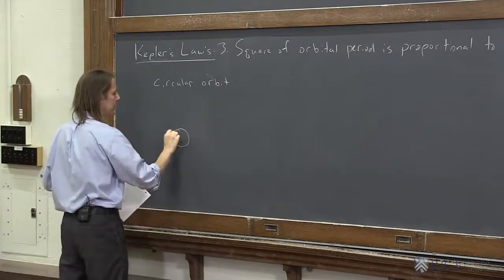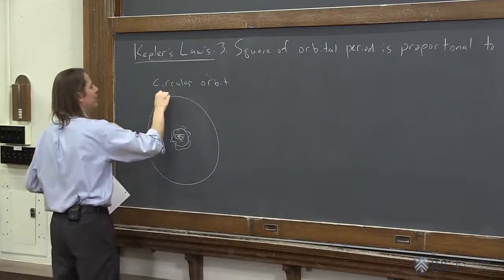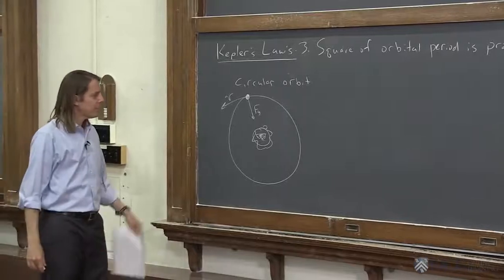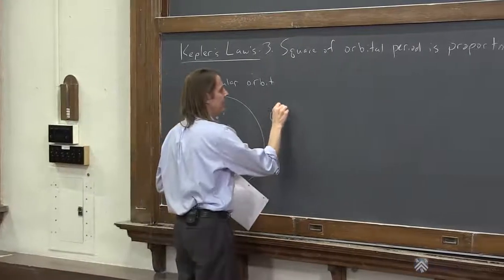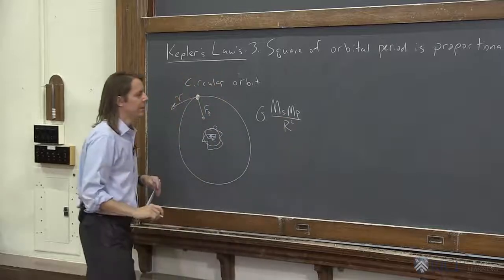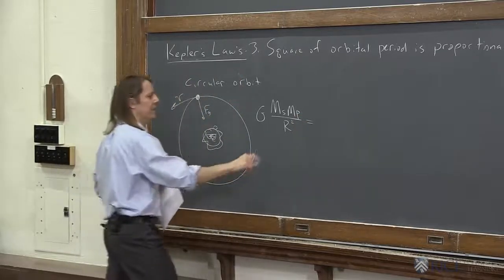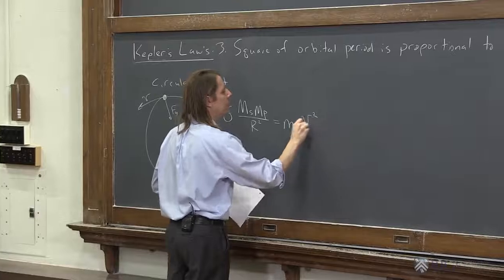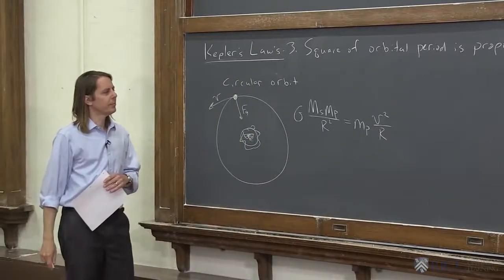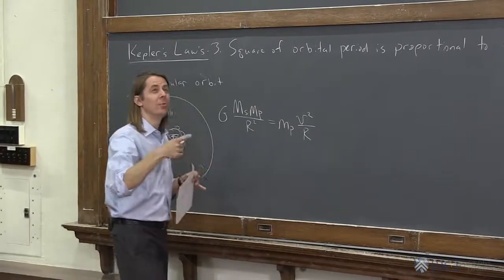All right, so here we go. We've got the sun here, and something going in an orbit like that. We've done this a few times now. It's got some speed. The gravitational force is its centripetal force. So we say centripetal force G, the mass of the sun, the mass of the planet, over their separation squared, there's the force, the magnitude of the force, equals M planet, its speed over that same R, if we think from the center of the sun to the center of the planet.